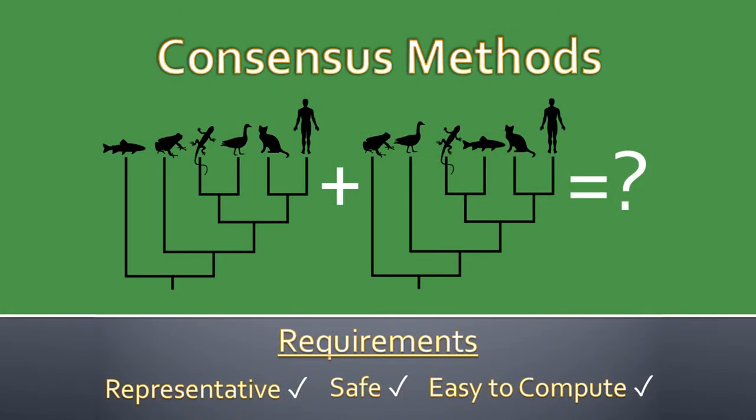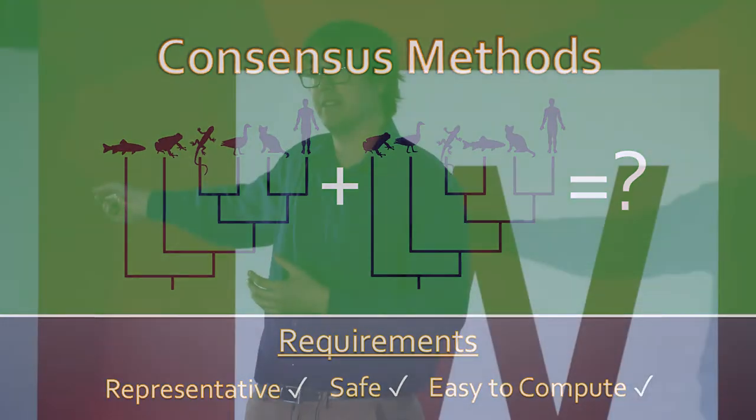In this particular case, biologists seem to want one tree that somehow represents all of the rest of them. But what does that even mean? For instance, in here, you can see in both of the diagrams that the cat and the human are really closely related. So maybe you want to capture that in your final product. Or maybe the fact that they both have exactly the same structure is important, and you want to capture that. Or any number of other things.